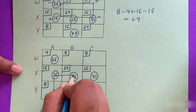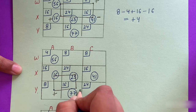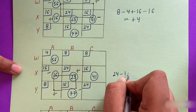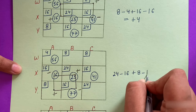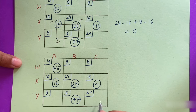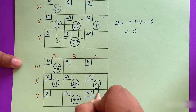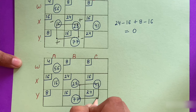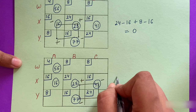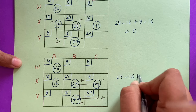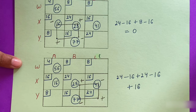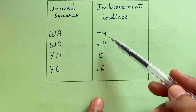For YA, we trace the loop and assign signs: improvement index = 24 − 16 + 8 − 16 = 0. For YC, tracing the loop and assigning signs: improvement index = 24 − 16 + 24 − 16 = +16. So the improvement indices for this iteration are: WB = −4, WC = +4, YA = 0, YC = +16.